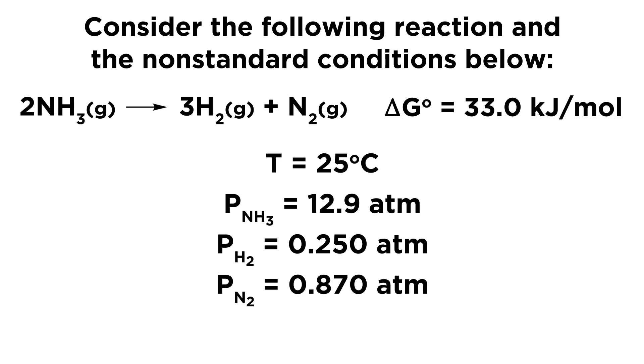Now here are the non-standard conditions we were referring to. We have a temperature of 25 degrees Celsius, and then we have some pressures for these three gases. For ammonia that's 12.9 atmospheres, for hydrogen that's 0.250 atmospheres, and for nitrogen that's 0.870 atmospheres.